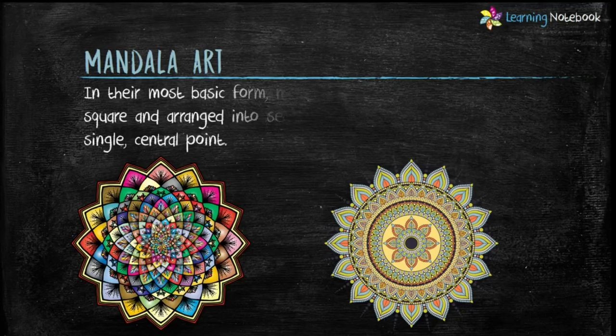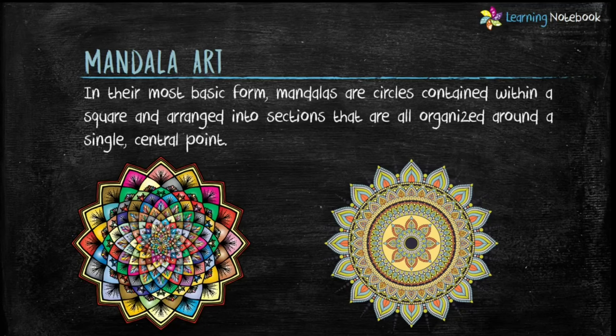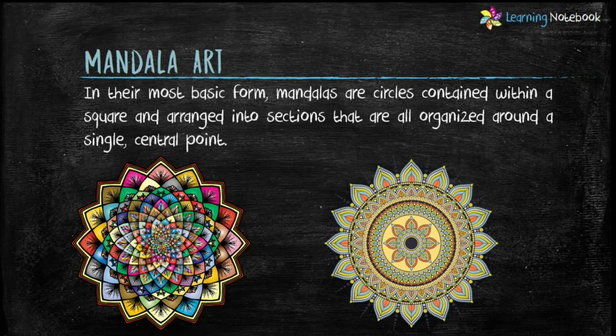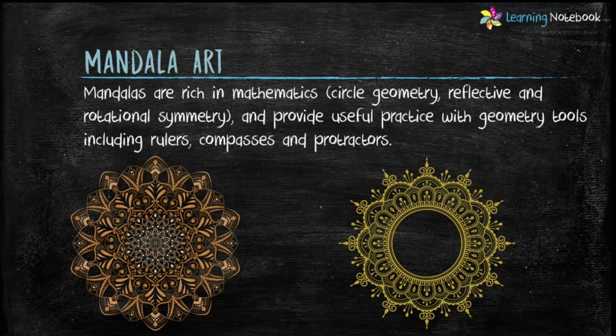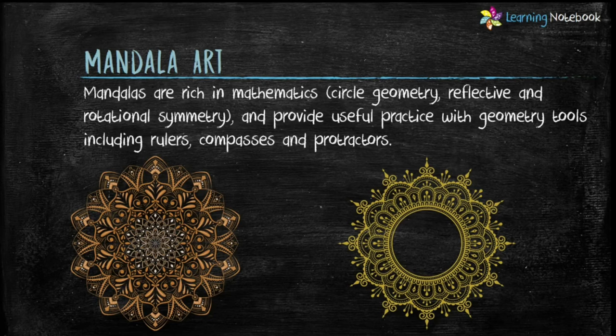In their most basic form, mandalas are circles contained within a square and arranged into sections that are all organized around a single central point. Students, mandalas are rich in mathematics like circle geometry, reflective and rotational symmetry, and they provide useful practice with symmetry tools including rulers, compasses and protractors.